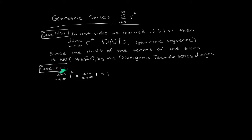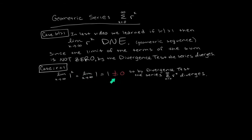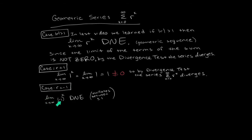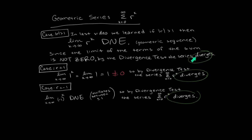Let's next consider the case of r equal to positive one. The individual terms would be one to the k. One to any power is still one, so the limit of the individual terms is one — again not equal to zero — so by the divergence test the summation diverges. Case r equals negative one: this oscillates plus one, minus one, plus one, minus one, etc. The value of this limit does not exist, so by the divergence test the series diverges in that case too. So we get diverges by the divergence test if the absolute value of r is either greater than one or equal to one.